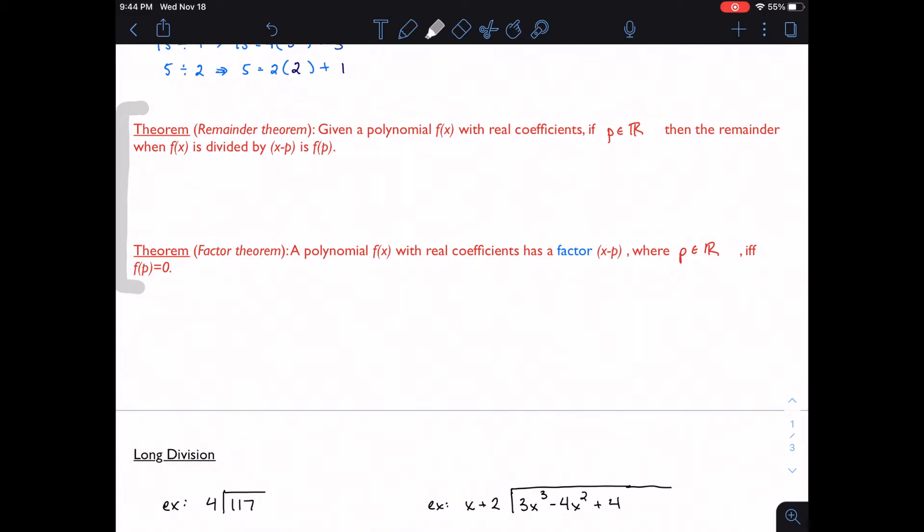The remainder theorem is here just to say that if I have a polynomial and it's got real coefficients, so it's a polynomial. If I have some number p that's a real number, then the remainder of f of x, when I divide by x minus p, is f of p. So it's saying that the remainder of this function divided by this divisor, right? is equal to the function value at that number. This doesn't seem important right now. Again, I'll talk about it a little later in an example.